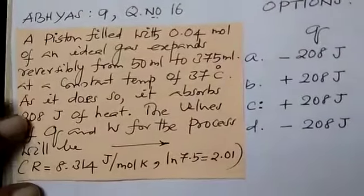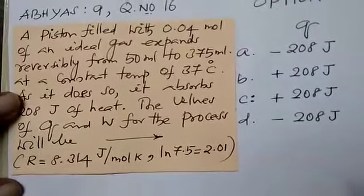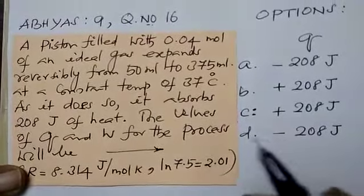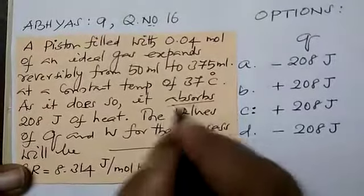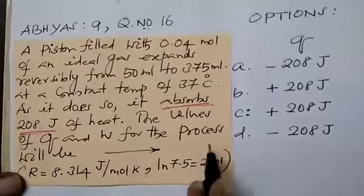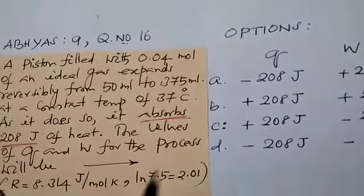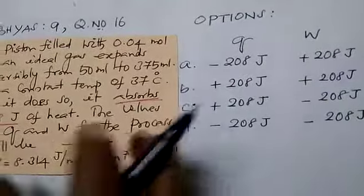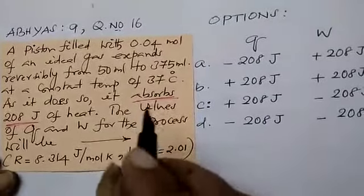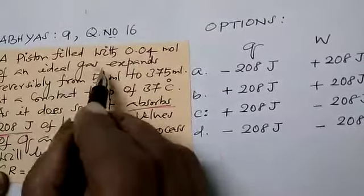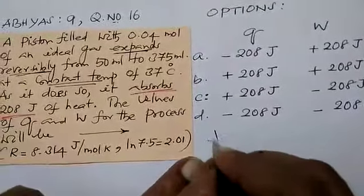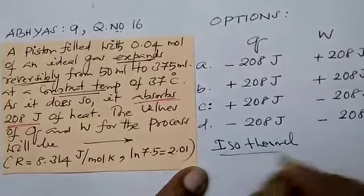A piston filled with 0.04 mole of ideal gas expands reversibly from 50 ml to 375 ml at constant temperature 37°C. As it does, it absorbs 208 joules of heat. The values of Q and W for the process will be what? They're asking Q and W. Let me give the easy method.